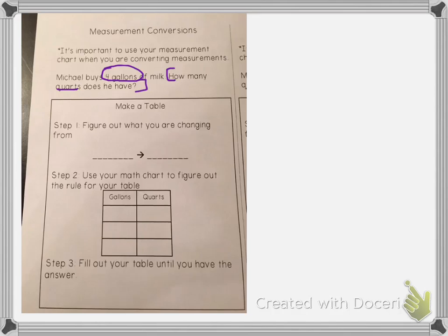So we're going to make a table. The first step is to figure out what we're changing from. So we're changing from gallons to quarts, and I'm just going to abbreviate.